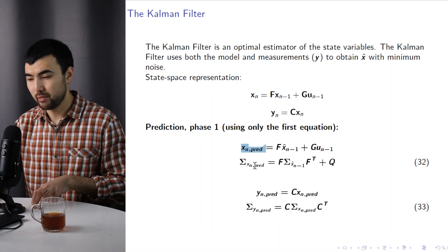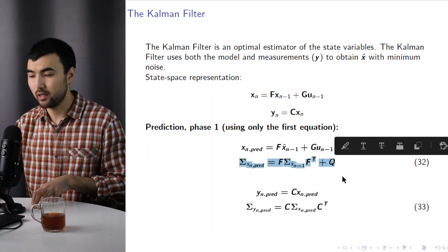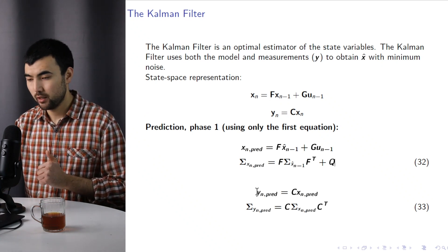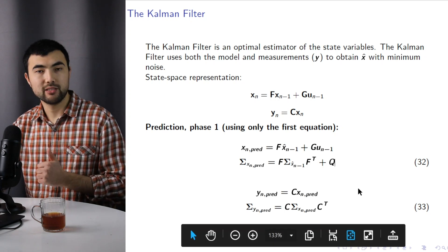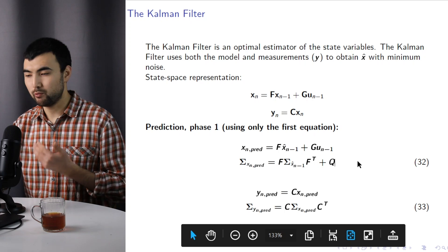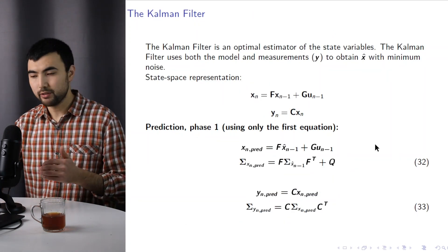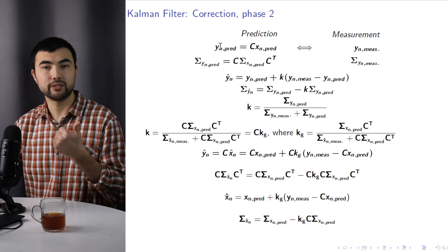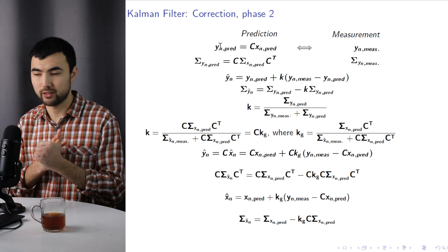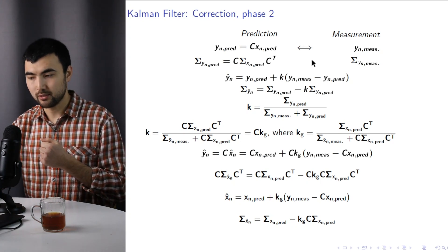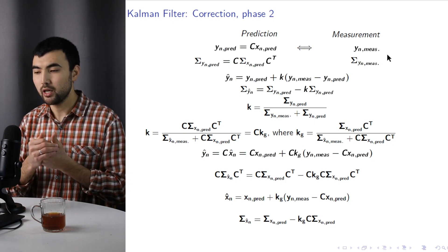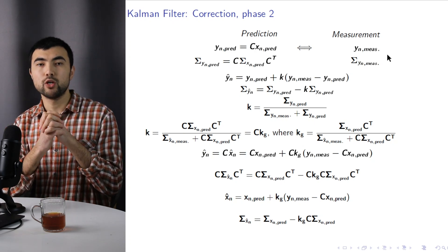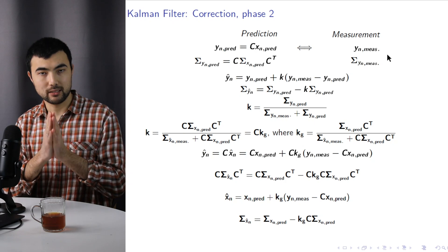We also compute the covariance matrix, predict the output vector y, and compute the covariance matrix of the predicted y. After the first phase, we end up with two sources of information. First, we have the predicted values of the output vector y. At the same time, we use sensors to measure y. So we have two sources of information, and we have to merge them to obtain the optimal value of x, the state vector.